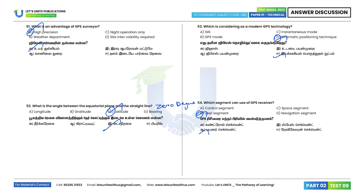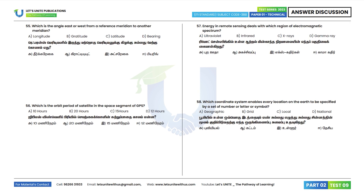Question 55: Which is the angle east or west from a reference meridian to another meridian? The answer is longitude. Option A is the correct answer.